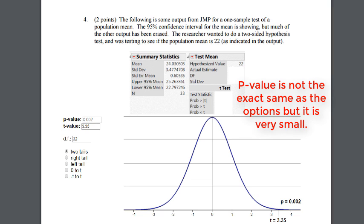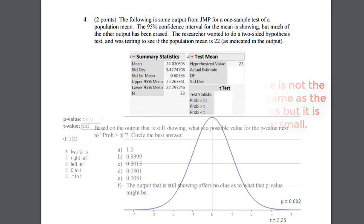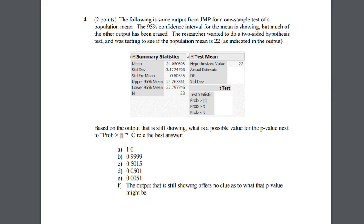But it gets it down to at least two choices of 0.0501 and 0.0051 and probably many of us would think it'd be very small and that would lead us to E, but there's another way of doing it with the output.